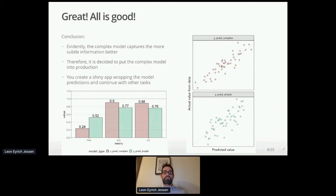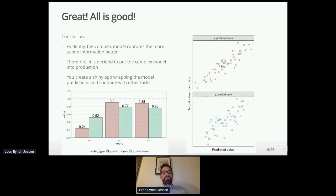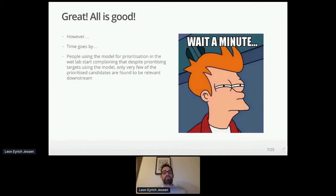It's decided this model should go into production. You create a shiny app, wrap the model nicely so wet lab scientists can use it easily, and continue with other tasks. But some time goes by and people start complaining. They know the documentation says it's good, but when they use it to prioritize targets, only very few candidates are actually found to be relevant downstream. That's not good.